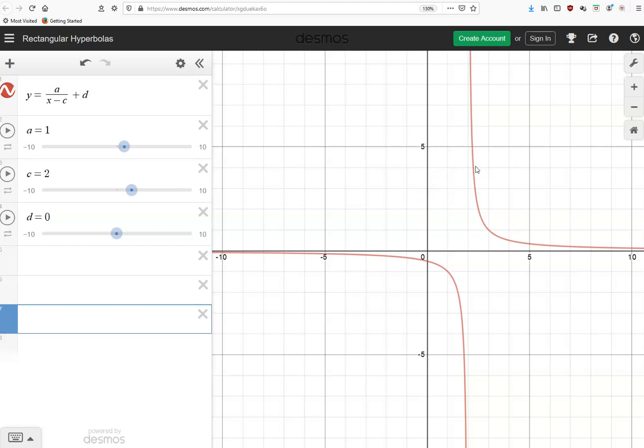So the point that was there has moved 2 across to the right. The asymptote, which was at x equals 0, is now at x equals 2. So the effect of making c larger, making c positive, is to move the graph to the right.